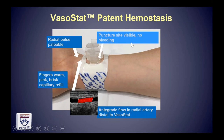From an external physical exam standpoint, you have a palpable radial pulse distally, fingers are nice and warm, the puncture site is visible with no bleeding. You can plethysmograph the thumb or index finger while occluding the ulnar artery to confirm, or put your duplex probe here and confirm antegrade flow distal.